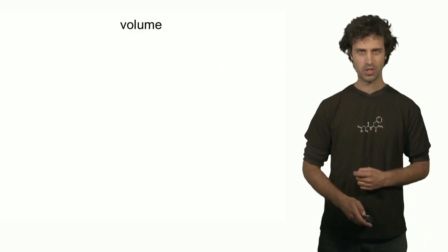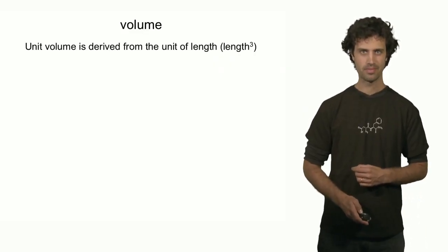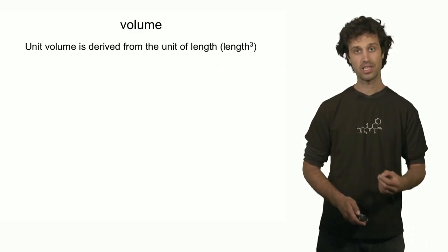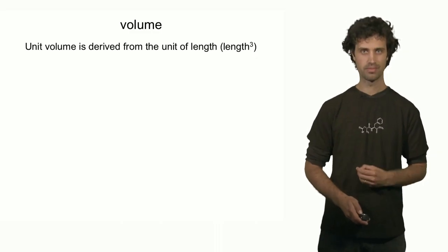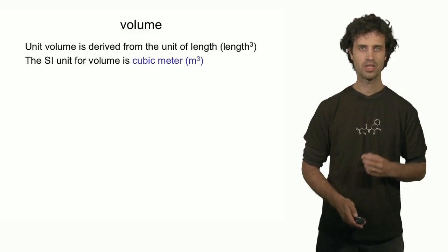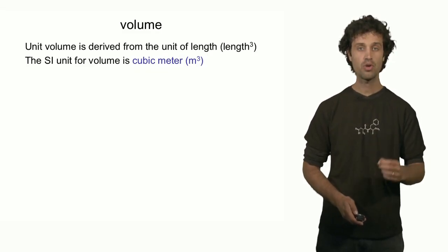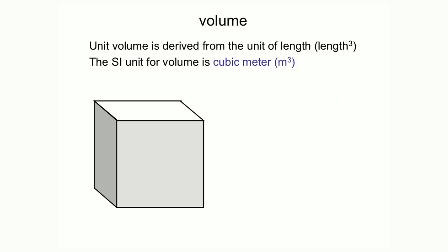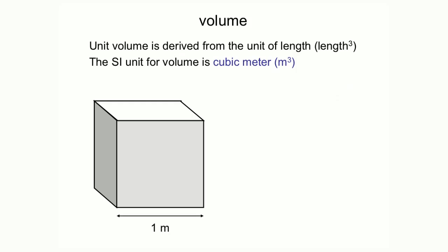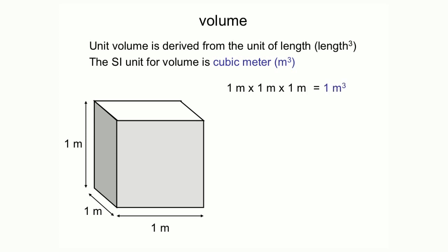Let's move on to the quantity of volume. The unit of volume is related to the unit of length as well — it is length cubed. In the SI system, the unit for volume is the cubic meter, or m to the third. Let's consider a box with a width, depth, and height of 1 meter each. The volume is 1 meter times 1 meter times 1 meter, and that equals 1 meter cubed.